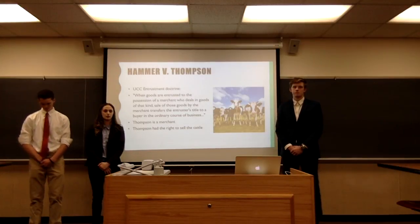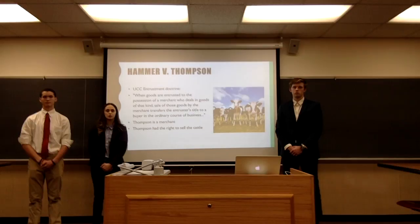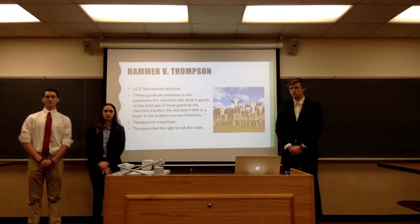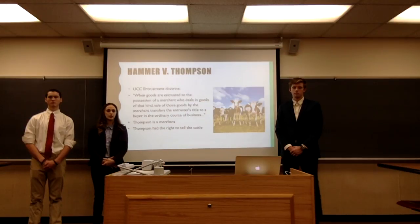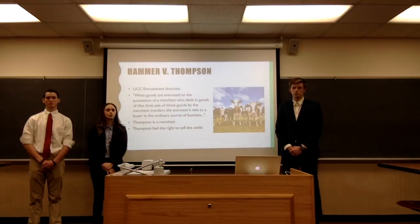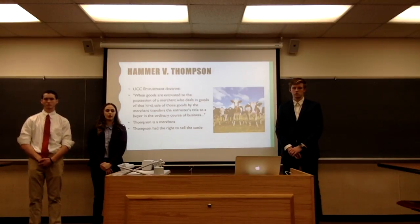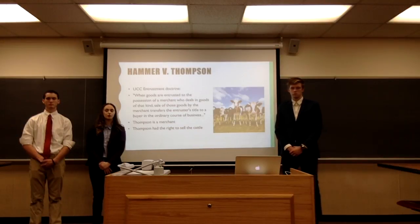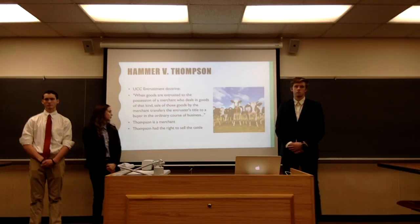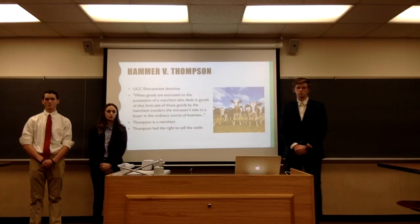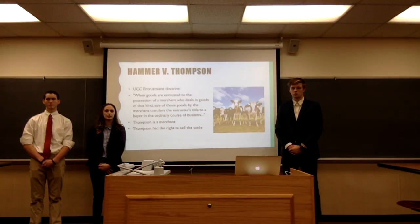A case dealing with Article 2 is Hammer v. Thompson. Hammer originally placed 150 cattle with Thompson on his pasture land for grazing. Thompson took that as being given possession of the cattle, converted them, and sold them to Morris — this continued through several people. Hammer argued that Thompson did not have possession of the cattle, but the first ruling was in Thompson's favor. In the appeal, the court looked at the UCC Entrustment Doctrine, which states that when goods are entrusted to the possession of a merchant who deals in goods of that kind, the sale of those goods transfers the entrustor's title to a buyer in the ordinary course of business. Since Thompson was a merchant and Hammer did not dispute delivering possession to Thompson, Hammer lost the appeal.